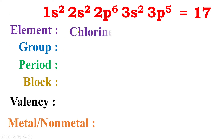If its atomic number is 17 then we can declare that this is chlorine. This is chlorine because we have to remember from hydrogen to the first 20 elements in increasing order of their atomic number: hydrogen, helium, lithium, beryllium, boron, carbon... and so on up to 20. It comes at 17 and that's why this is chlorine.